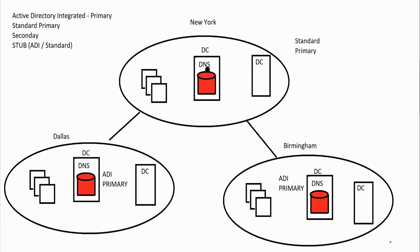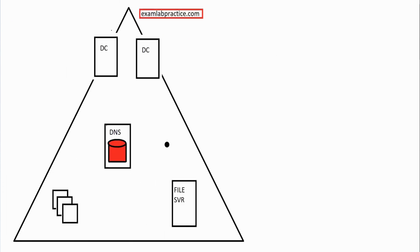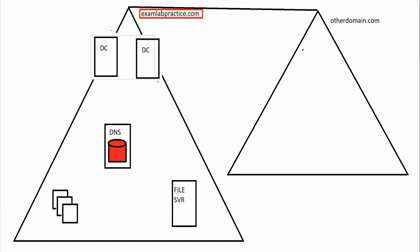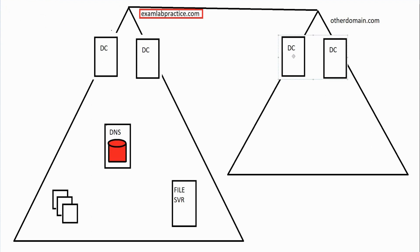The last type of database is called a stub zone. You're not usually going to use a stub within the same domain — stub zones are generally used in situations where you have multiple domains. For example, let's say we've got another domain called 'otherdomain.com' and there's a trust relationship between the two domains. They have their own domain controllers hosting Active Directory.